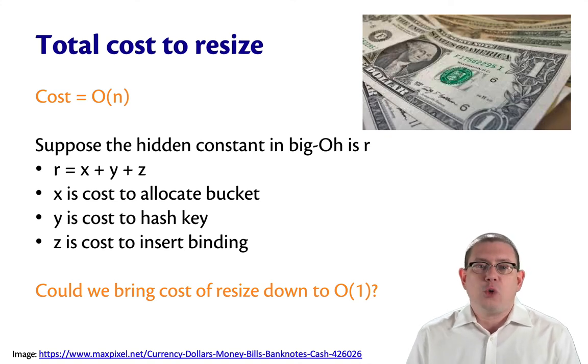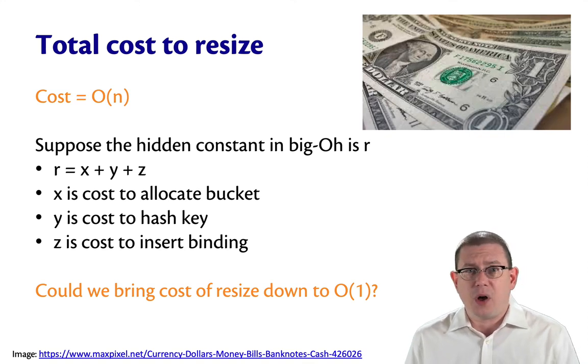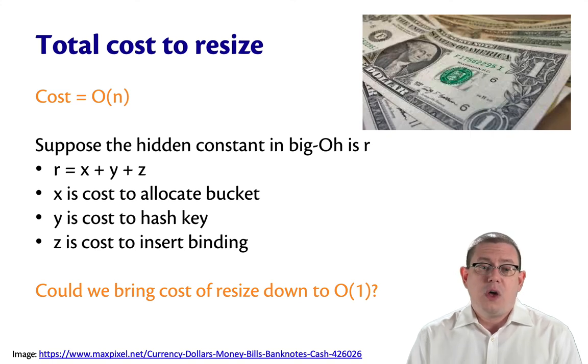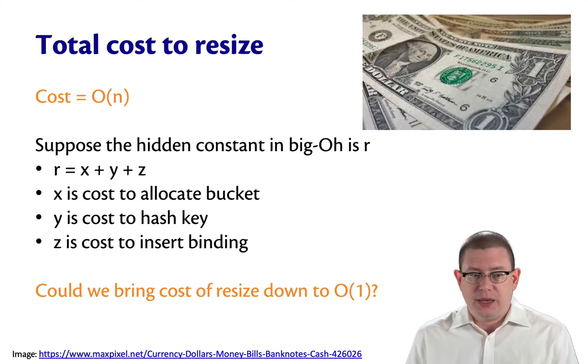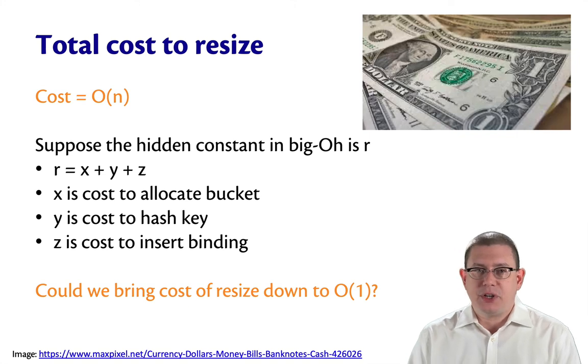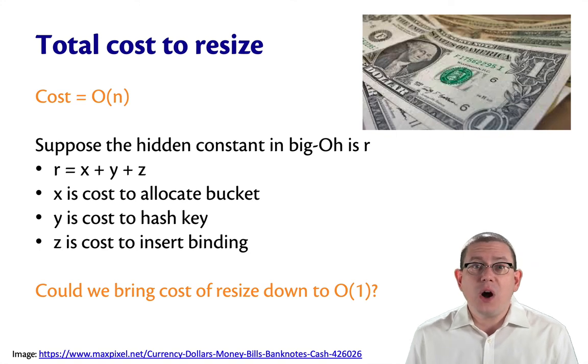We're not going to go too much farther with it. But suppose that x here represents the cost to allocate a bucket. Because we're going to allocate n buckets, and each one of those is going to have some cost. We're calling that x. We're also going to have to n different times hash a key. So, let y be the cost to hash a key. And we're going to have to insert a binding n different times. So, let's say that z is the cost of inserting a binding. So, R then is the total cost per binding of doing a reallocation, rehash, and reinsert.